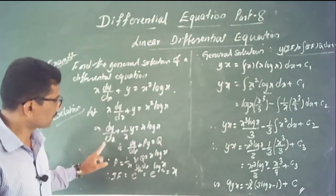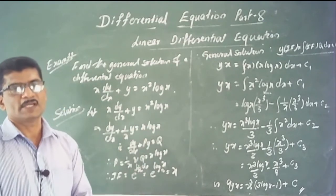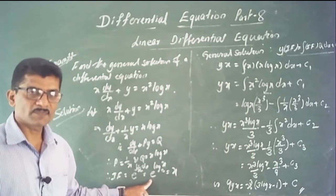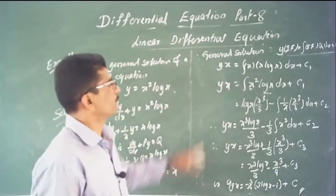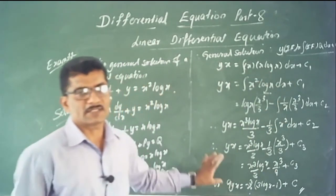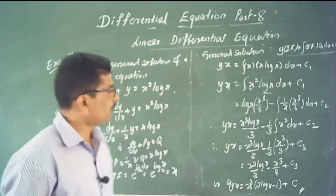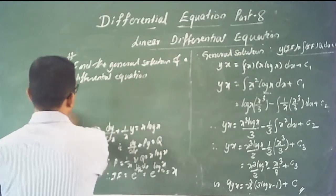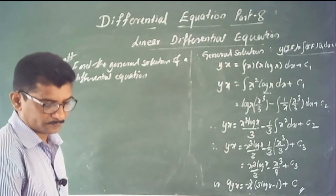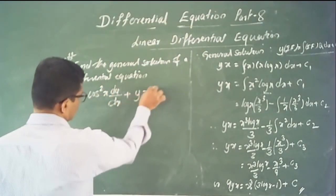First, write in the form dy/dx + P·y = Q. Identify P and Q, find the integrating factor, write the general solution, and integrate the right-hand side to get the required solution. One more example: find the general solution of cos²x · (dy/dx) + y = tan x.